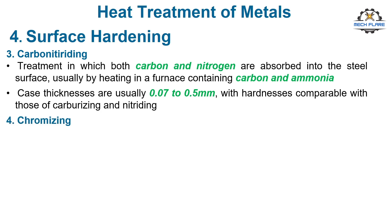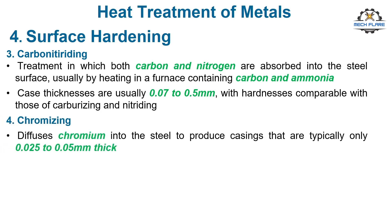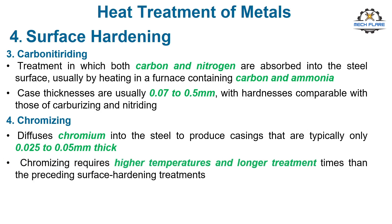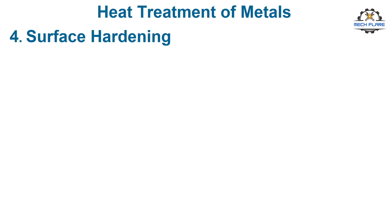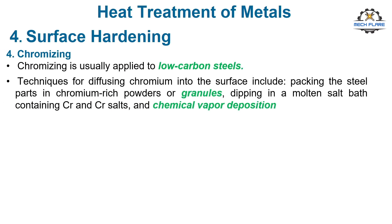Chromizing is a heat treatment that diffuses chromium into the steel to produce casings that are typically only 0.025 to 0.05 mm thick. Chromizing requires higher temperatures and longer treatment times than the preceding surface hardening treatments, but the resulting casing is not only hard and wear resistant — it is also heat and corrosion resistant. Chromizing is usually applied to low-carbon steels. Techniques for diffusing chromium into the surface include packing the steel parts in chromium-rich powders or granules, dipping in a molten salt bath containing chromium and chromium salts, and chemical vapor deposition.